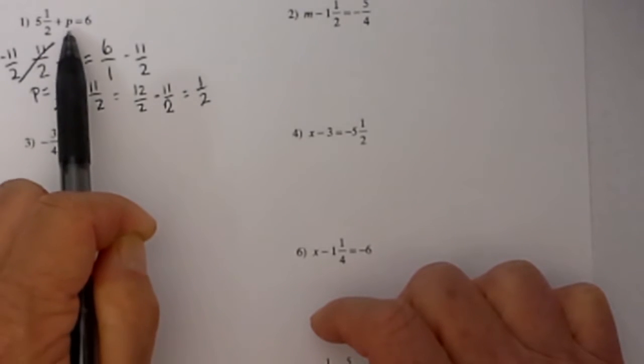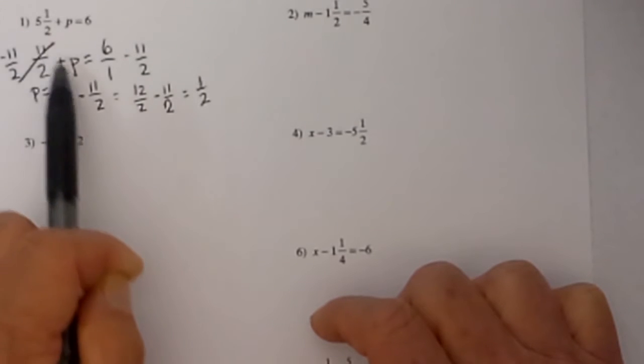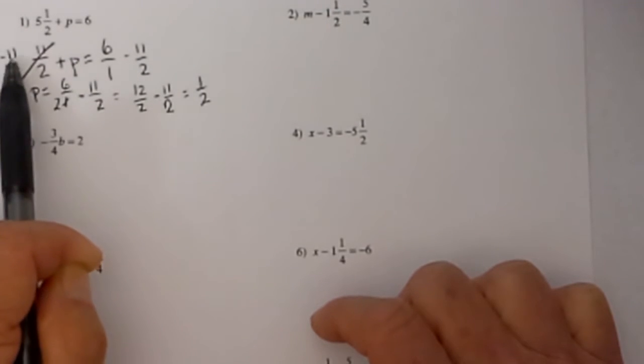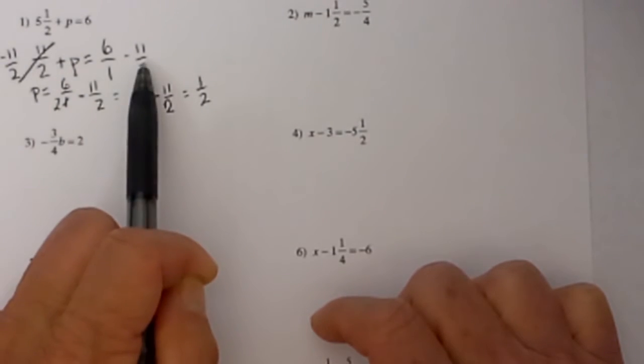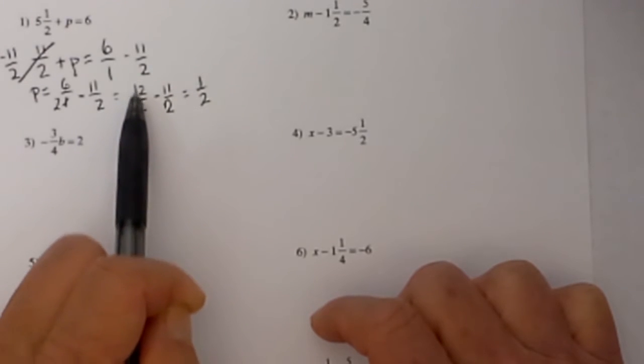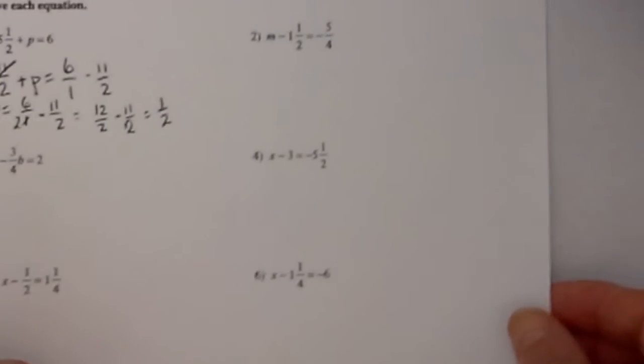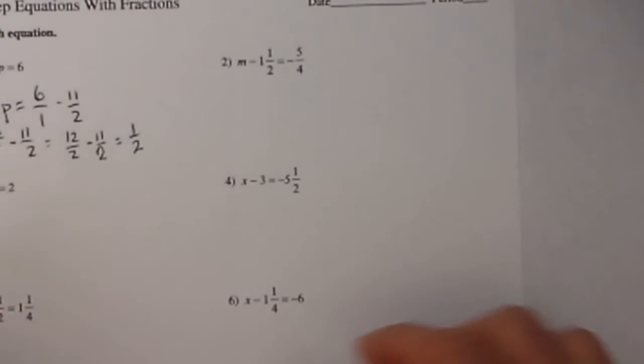So again what I did was to isolate the p, I converted to an improper fraction. To isolate the p I subtracted 11 halves from both sides and then I found the common denominator which was 2. 1 will go into 2 two times, 2 times 6 is 12 and then I subtracted those to get 1 half. Let's work another one and we will pick up the pace a little bit.